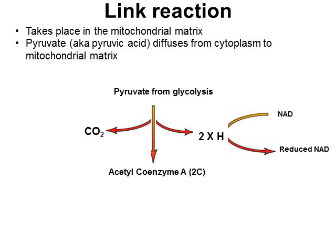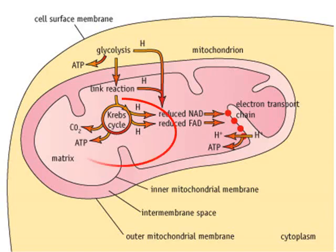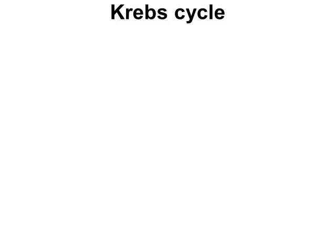Decarboxylation is the removal of carbon dioxide — if you were adding CO₂ you'd be carboxylating, which we'll see in photosynthesis later on. The acetyl part of acetyl coenzyme A has the two carbons from the pyruvate. Coenzyme A is actually quite a large molecule, but all it's doing is carrying those two carbons — the acetyl group — into the next stage of respiration. Think of it as effectively having two carbons going forward in the reactions.